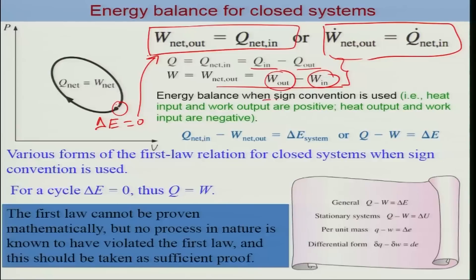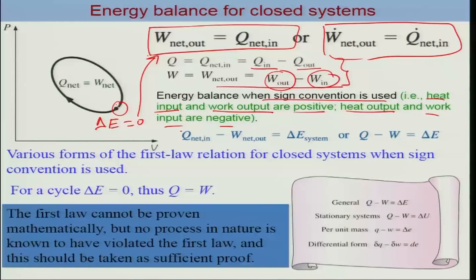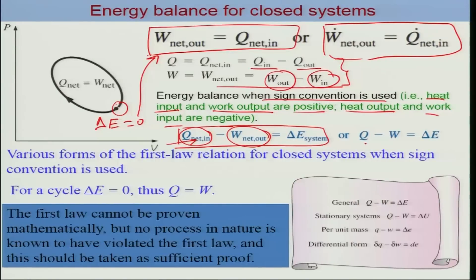For the typical energy balance when sign conventions are used: heat input and work output are positive, while heat output and work input are negative. This is the sign convention we use when the direction of heat and work are not specified in the problem. So we assume Q is heat supplied to the system and W is work done by the system. Q minus W equals delta E, which is the generalized first law expression for a closed system.